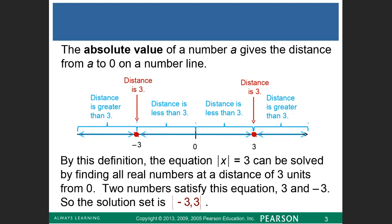The absolute value of a number A gives the distance from A to 0 on a number line. The absolute value is just the distance, and when talking about distance, the sign is always positive, so there is no negative number for a distance.